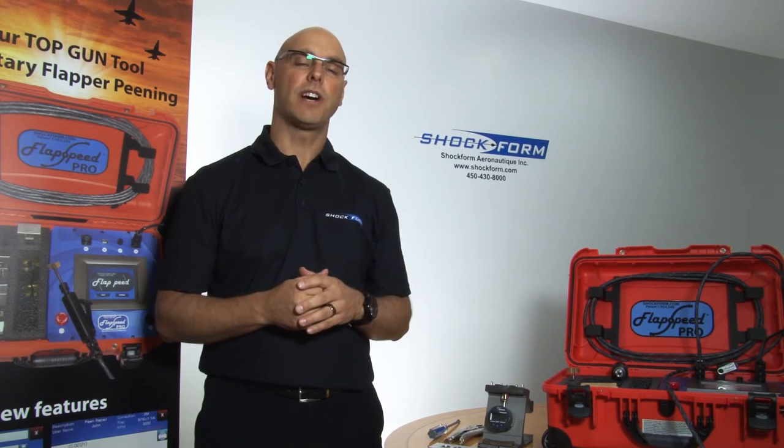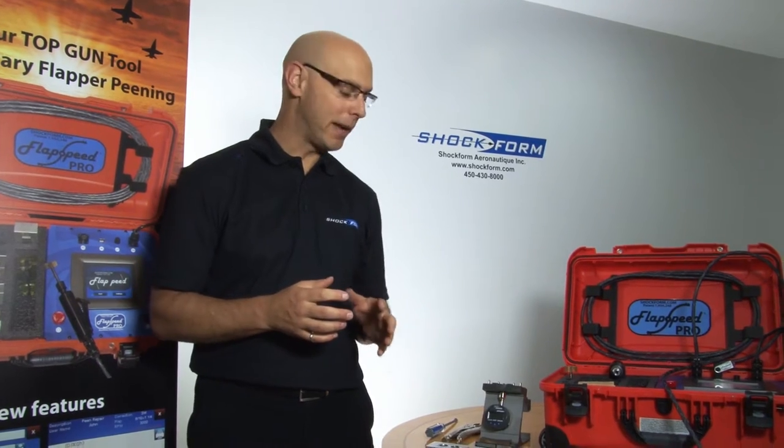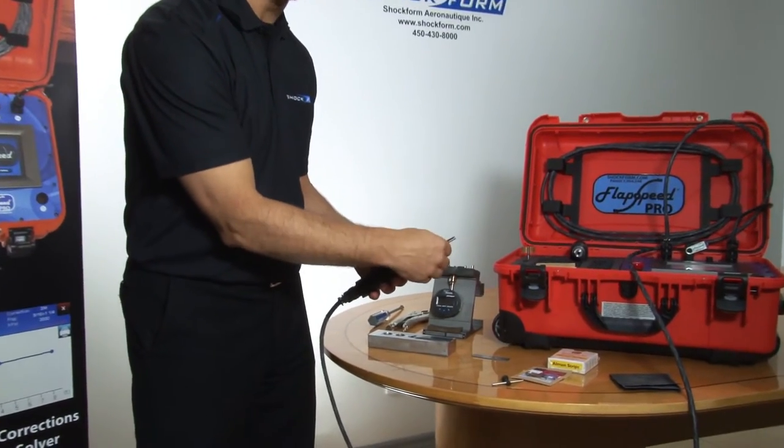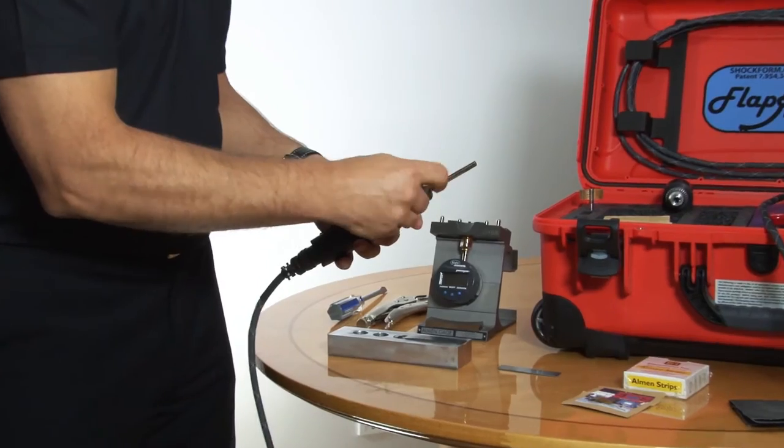In this video we'll be talking about the flapper peening technique. The first step is to insert your mandrel into the chuck of the handpiece grinder. Take the key and tighten the mandrel in place.